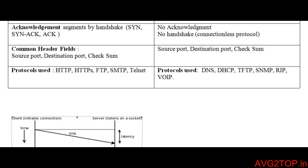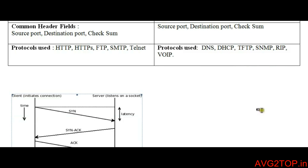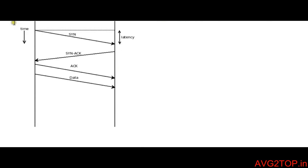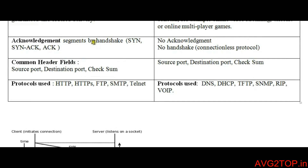Acknowledgement in TCP is done by segments via handshake. In this diagram, we can see a client computer and a server. First, the client gives a request to the server, the server gives a response, and it acknowledges — there is a relationship between the client and server, a handshake. In UDP, there is no acknowledgement and no handshake because it is a connectionless protocol. A similarity between TCP and UDP is the source port, destination port, and checksum, which are the same in both.